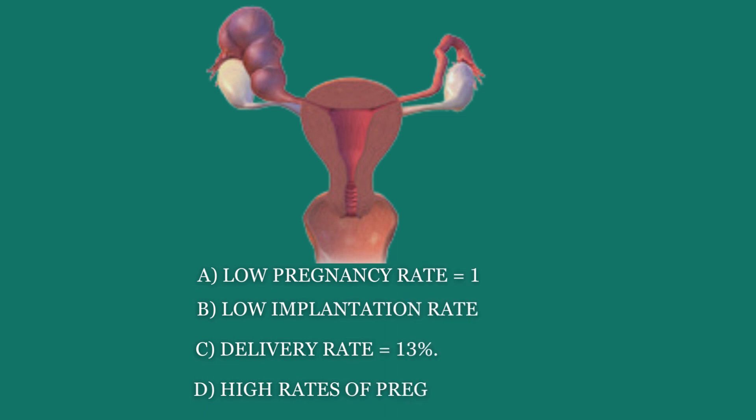A study looked at the success rate of patients with hydrosalpinx versus those without. It was found that patients with hydrosalpinx had the lowest pregnancy rate of about 19%, the lowest implantation rate of about 8%, and a delivery rate of about 13%. A high rate of pregnancy loss was also encountered in patients who got pregnant with hydrosalpinx using IVF.